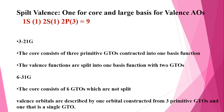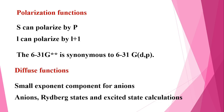Similarly, 6-31G uses six Gaussian-type orbitals for the core, which are not split further, and then 3-1G or double-zeta behavior for valence. The total number of Gaussian-type orbitals remains nine in that example.